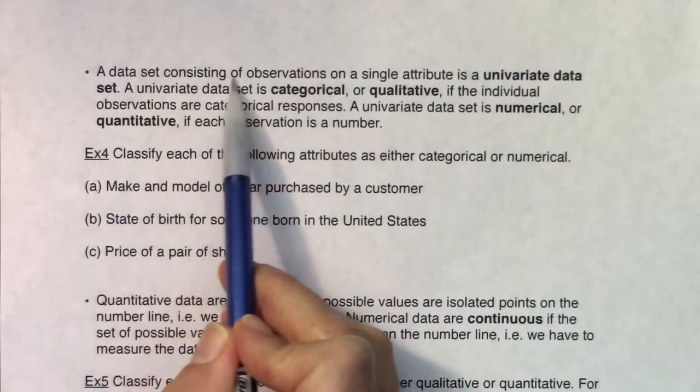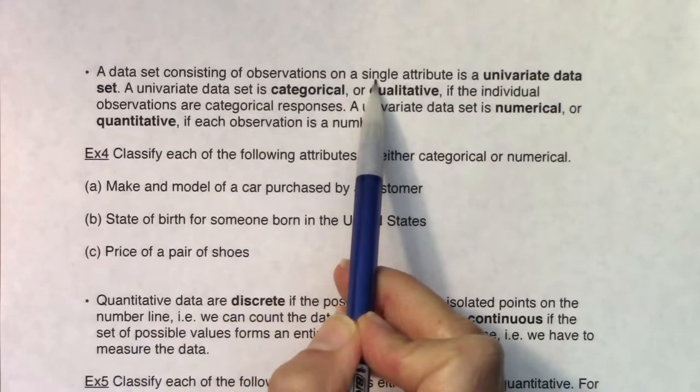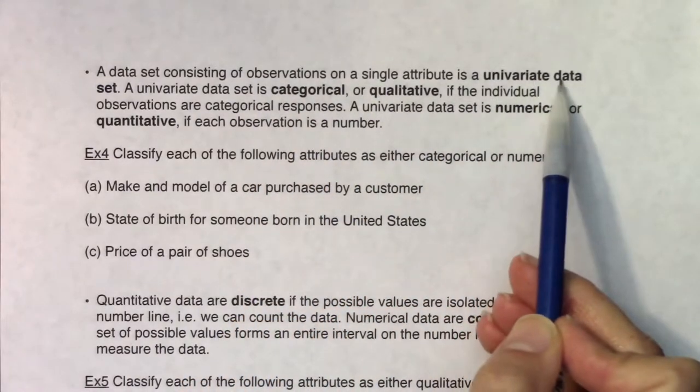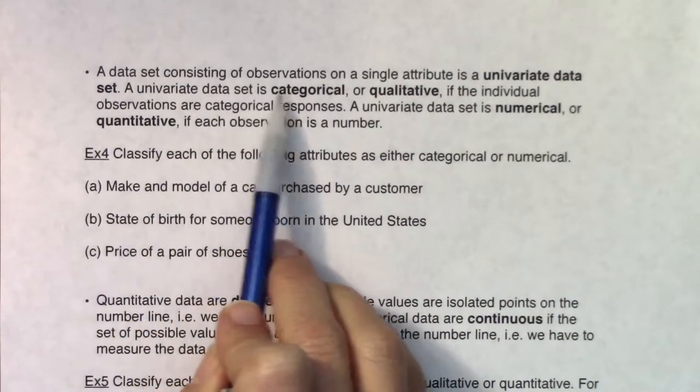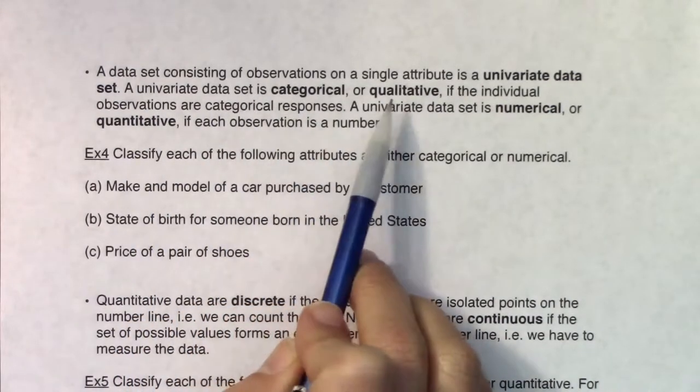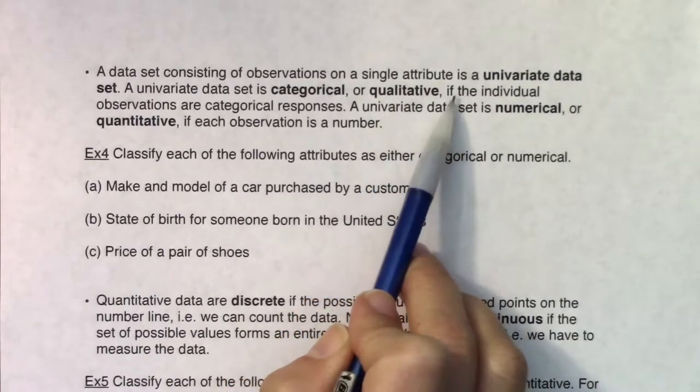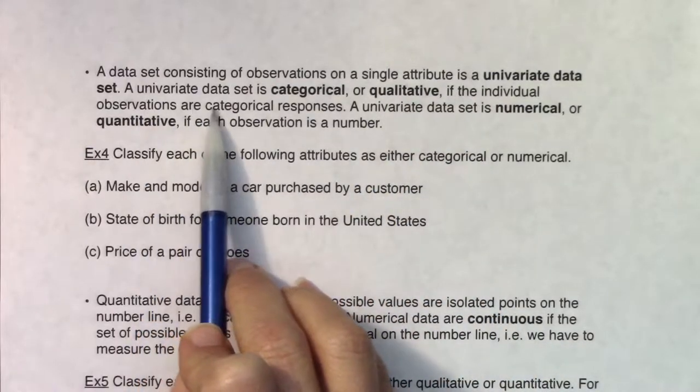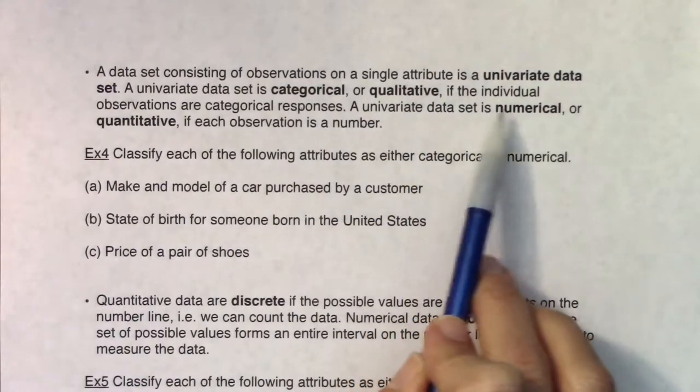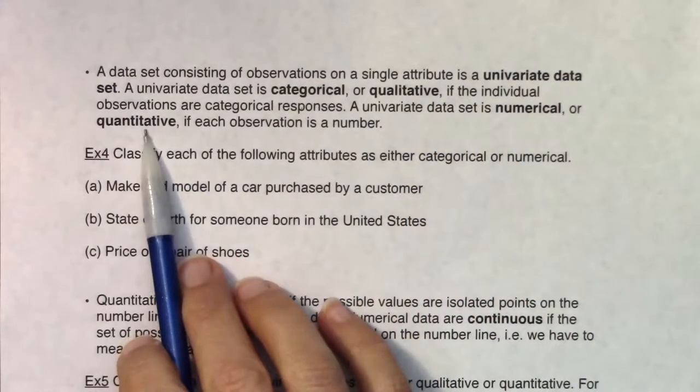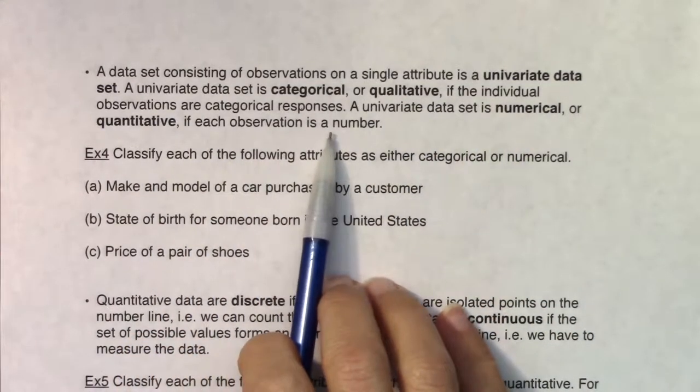A data set consisting of observations on a single attribute is a univariate data set. A univariate data set is either categorical or qualitative if the individual observations are categorical responses, and a univariate data set is numerical or quantitative if each observation is a number.